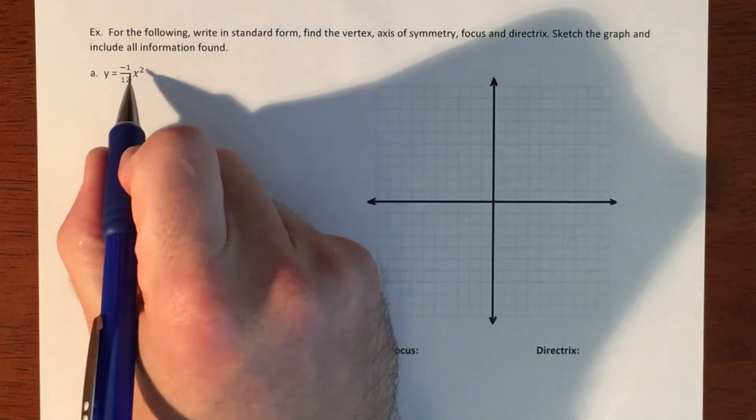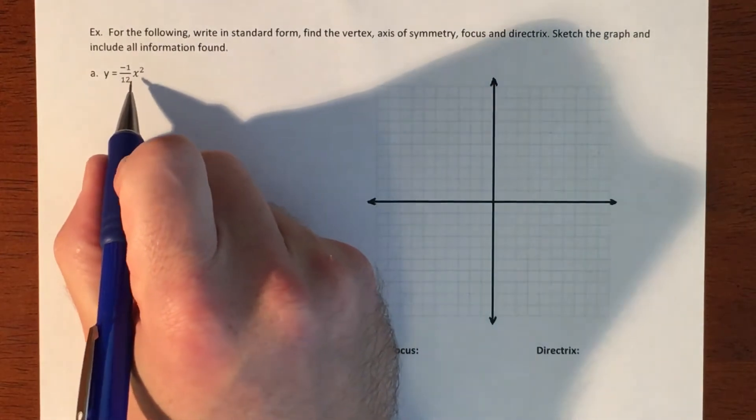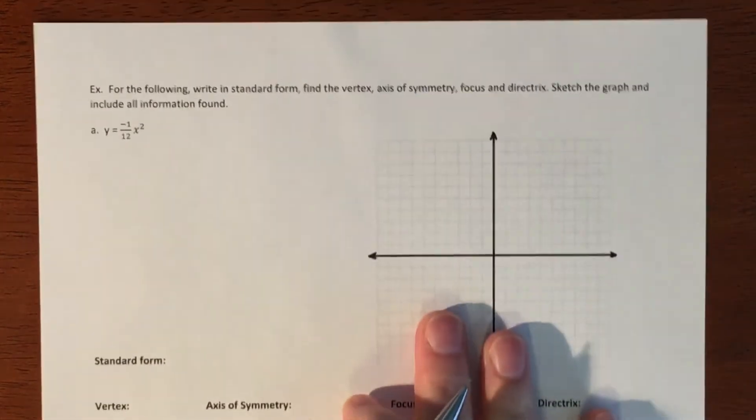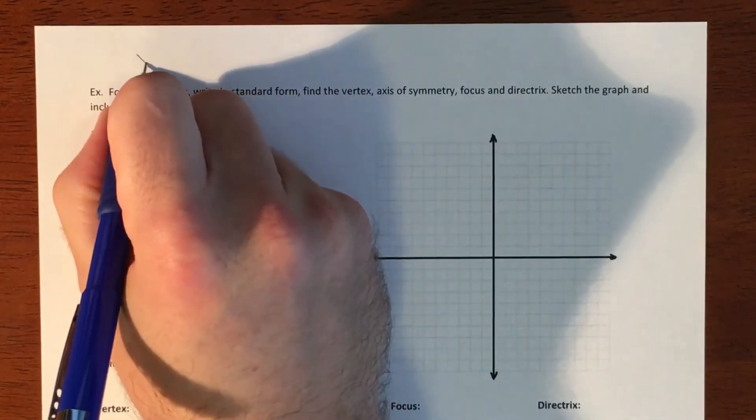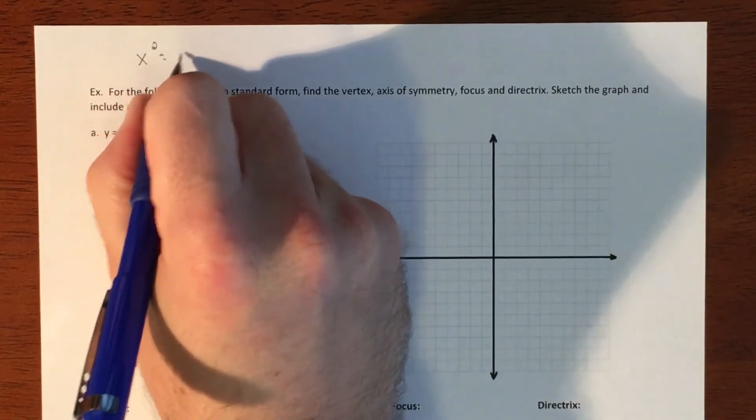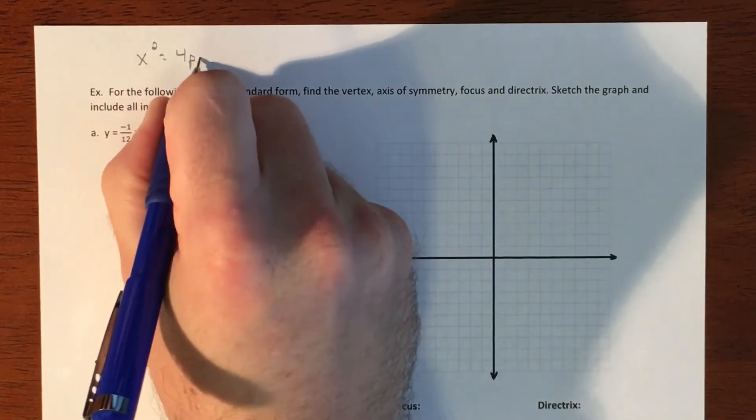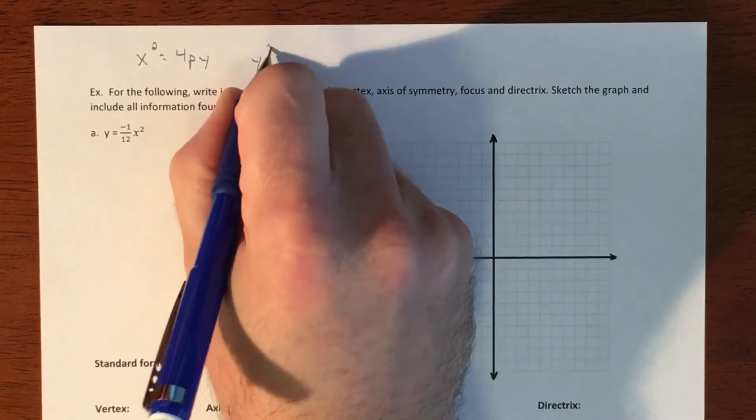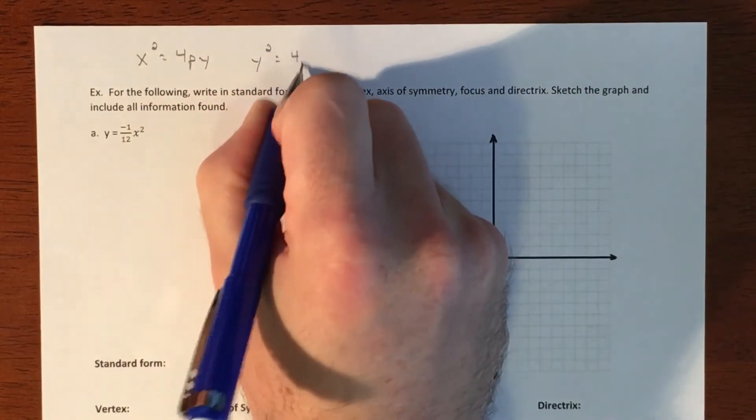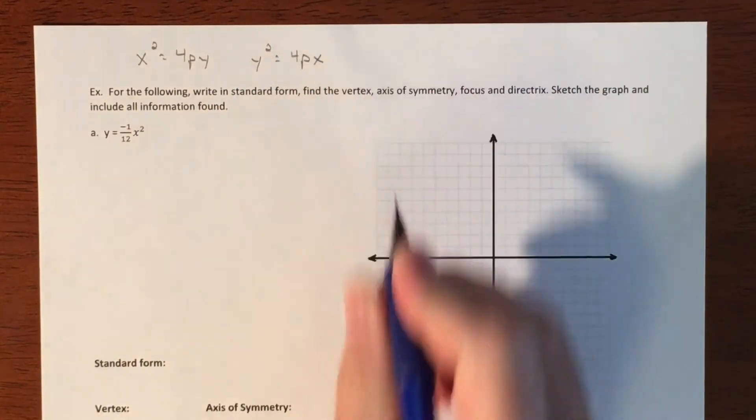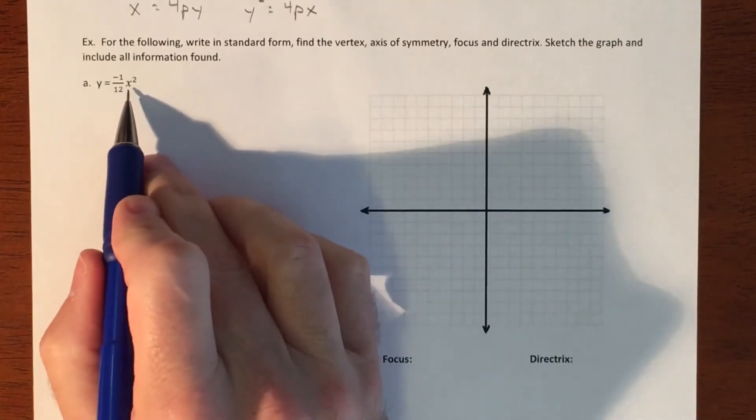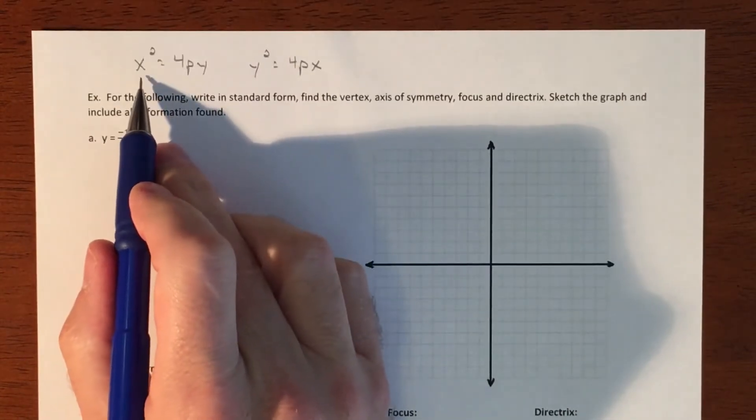So first thing is, we have to look at what's going on. So we're going to have to determine whether we need it to look like this, or this. Okay, so since the x is being squared, we're going to want to get the x squared by itself.